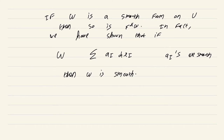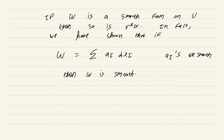In fact, we have shown that if omega = summation a_I dx_I and the a_I's are smooth, then omega is smooth. What this means is: if under the standard basis dx_I you express the coordinate functions a_I and they are smooth, then the entire form omega is smooth. Smoothness of a form means its local expression in any parameterization should be smooth — and if you have one such expression where the a_I's are smooth, it will be smooth in any other parameterization of this open set.